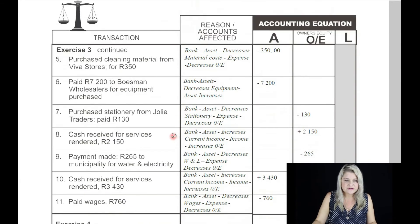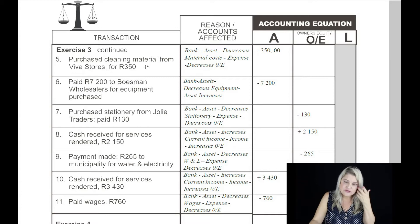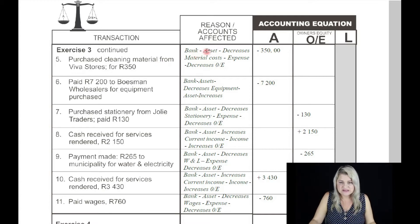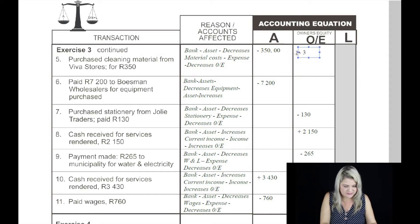Exercise number three, continued — transaction number five: purchase cleaning material from Viva Stores for 350 Rand. Bank is one account, which is an asset and it decreases. Material cost is an expense, and an expense always decreases owner's equity — by 350 Rand.